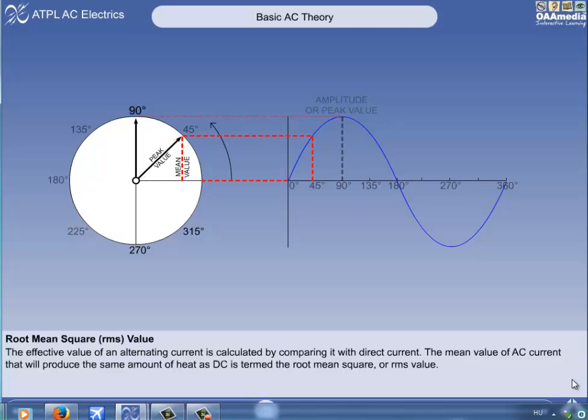In our case, the hypotenuse is equal to the peak value, and the opposite is equal to the mean value.